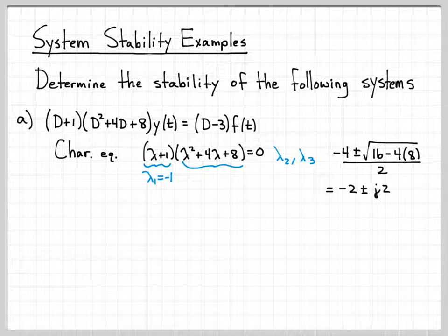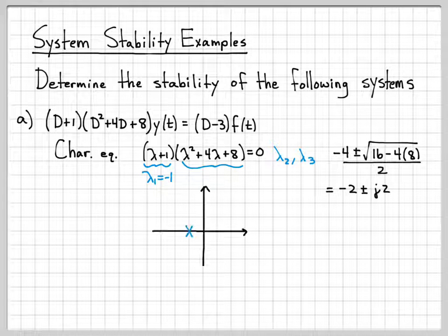We can just plug into that and solve for the roots lambda 2 and lambda 3. And you get minus 4 over 2, which is negative 2. And then this ends up being a negative 16, which is j4. J4 divided by 2 is j2. So we actually end up with some complex conjugate roots in this case.